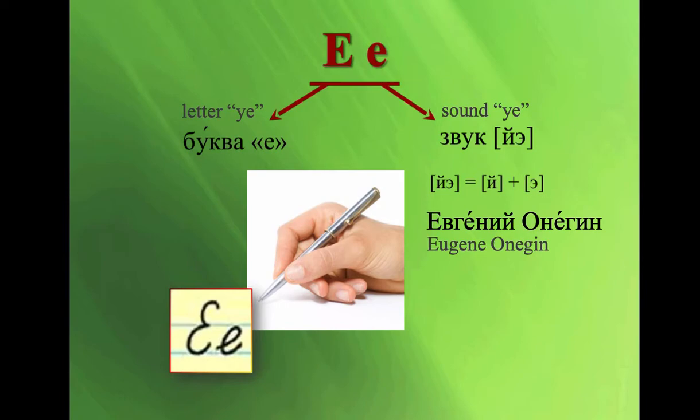Е. Е. Composed of two sounds. Е. Е. Евгений Онегин. This is a novel in verse by Alexander Pushkin.